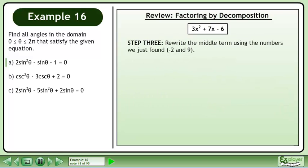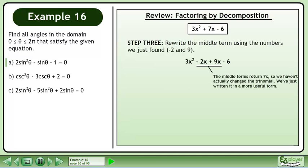In step 3, rewrite the middle term using the numbers we just found, negative 2 and 9. This gives us 3x² - 2x + 9x - 6. The middle terms return 7x so we haven't actually changed the trinomial — we've just written it in a more useful form.